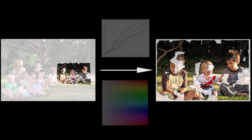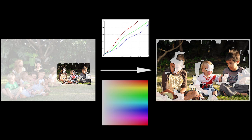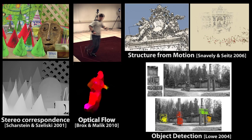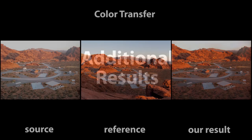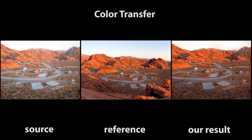We have presented a model and algorithm for jointly matching the global color transformation and local dense patch correspondence between a pair of images. In the future, we believe our approach may have broader applications in the many graphics and vision problems requiring correspondence between images — from stereo and optical flow, to 3D reconstruction, to object detection. Our method is robust, practical, and effective for real-world image adjustment tasks.